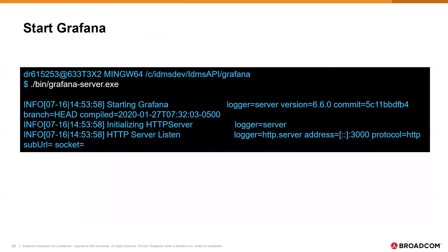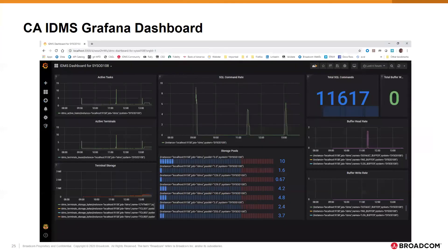Grafana configuration is even simpler. We just accept the default configuration and start Grafana — it will listen on port 3000 on our local host. Now that Grafana is running, we can point our browser at it. We can create a dashboard and add panels that will display the metrics we choose in the format we like, or we can modify an existing panel by selecting Edit from the panel's pull-down menu.